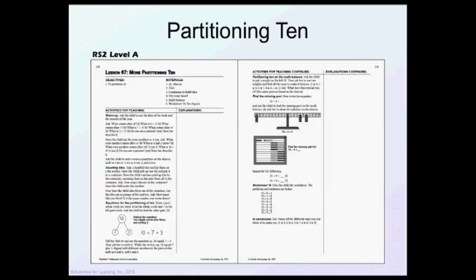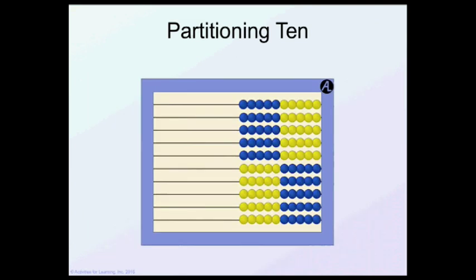Let's look at partitioning ten. This is coming from Level A. We're going to partition ten. What makes ten? One and nine, two and eight, three and seven, four and six. And we can keep going so we can see what makes ten.